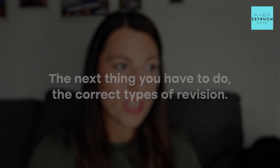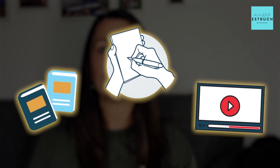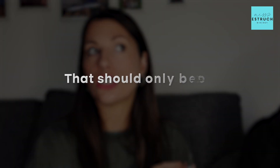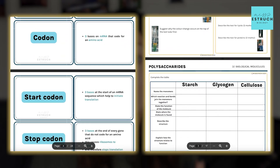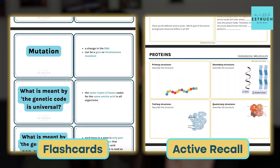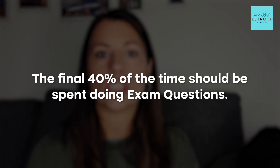The next thing is: did you do the correct types of revision? You need to make sure you're not just reading your notes, reading the textbook, or watching YouTube videos — that's all very passive. It'll help you understand the information but won't help you remember it or improve your exam technique. That should be only about 20% of your revision. Spend 40% testing whether you can remember it, using flashcards or active recall. The final 40% should be spent doing exam questions, as that's the best way to improve your technique and get familiar with the level of detail examiners want.